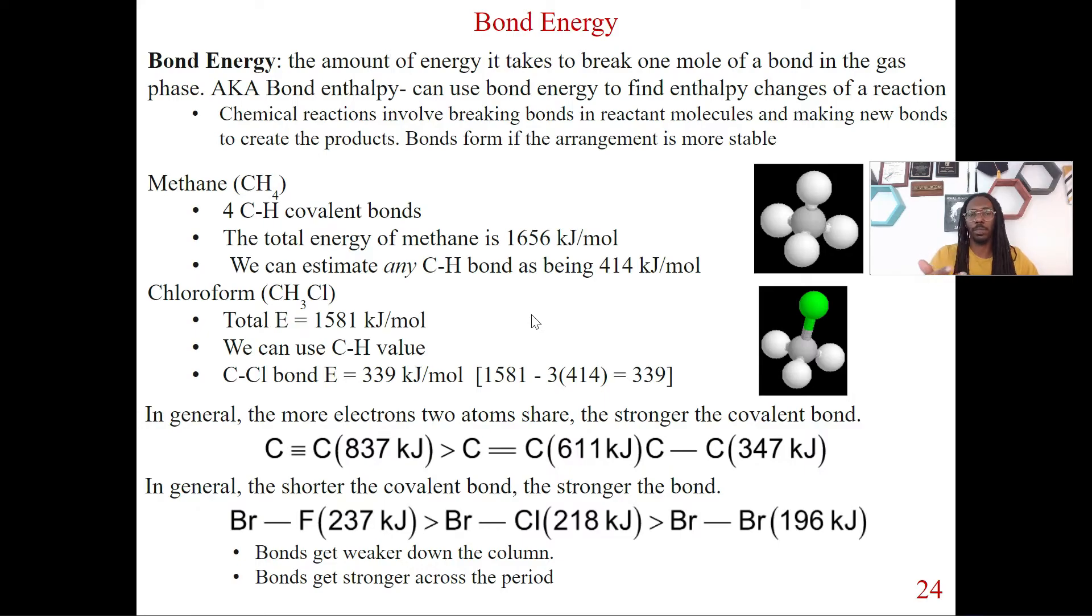So in this case we got to do it a little bit different. So in this case for this total energy, we're going to have a total energy of 1581 kilojoules per mole for my entire chloroform compound. Now we can use a CH bond that we know is going to be 414, and we could determine the chlorine to carbon bond here. So using that value, we could just do 1581 minus three of those CH bonds,